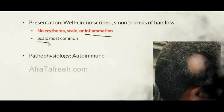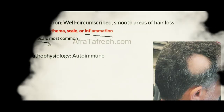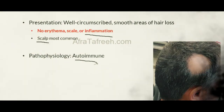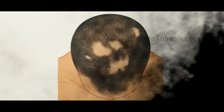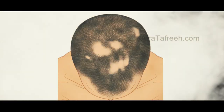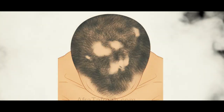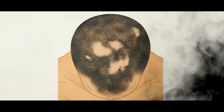The pathophysiology of alopecia areata is immune-mediated, specifically autoimmune in etiology, in contrast to other types of alopecia driven by infectious, hormonal, or other medical processes. Alopecia areata can be unifocal or multifocal; regardless, these lesions are well-circumscribed and clearly lack erythema, scale, or evidence of inflammation. This non-inflammatory nature of the discrete lesions is highly characteristic of alopecia areata.